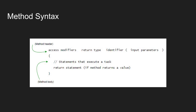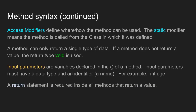An access modifier defines how or where the method can be used. For these next videos, we are going to be focusing on the static access modifier. Static means that the method is called from the class in which it was defined, as opposed to non-static methods that are called from instances of a class — but we will get to that later.